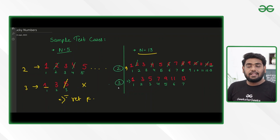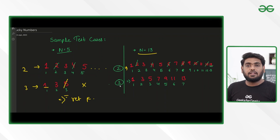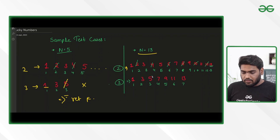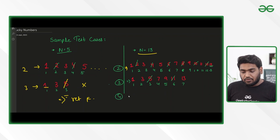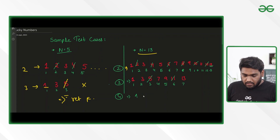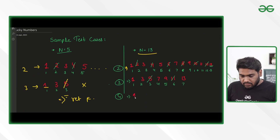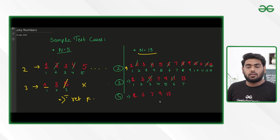Let's see what happens in the next iteration — when we cancel every third integer. Once we cancel every third integer, for the second pass also, 13 is safe. Next, we have to cancel every fourth integer. The modified set is 1, 3, 7, 9, and 13.